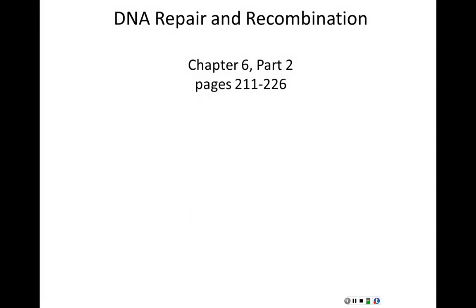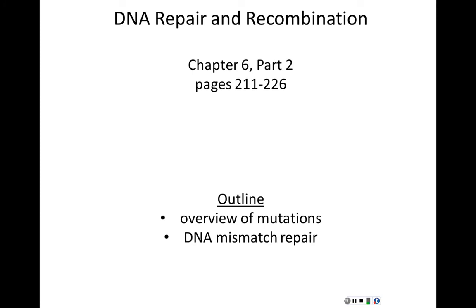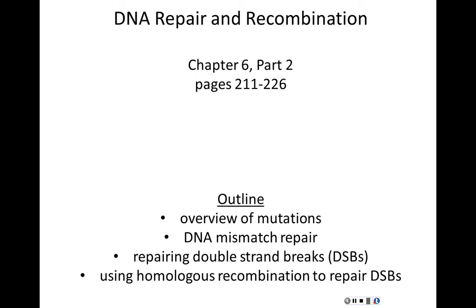Today we're going to finish up Chapter 6, the second part, pages 211 to 226, discussing DNA repair and recombination. We'll start with an overview of mutations, then cover DNA mismatch repair and other repair systems. We'll discuss how double strand breaks are repaired, specifically through homologous recombination, and end with mobile genetic elements.